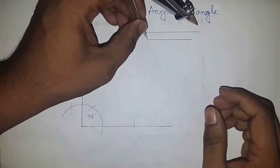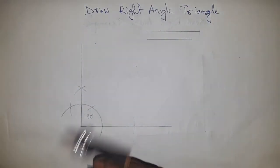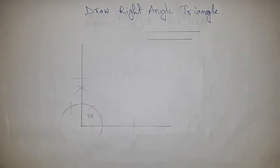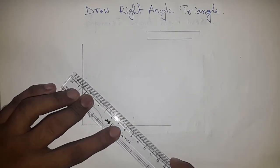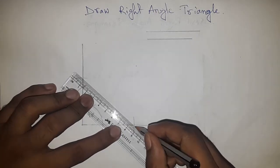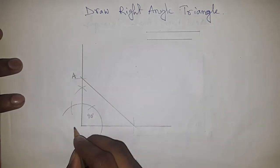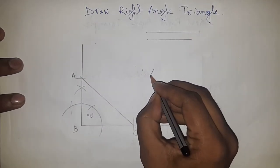Now taking the measure of this side. Now putting here and cut the line. Now joining these two points. So this A point, B point and C point.